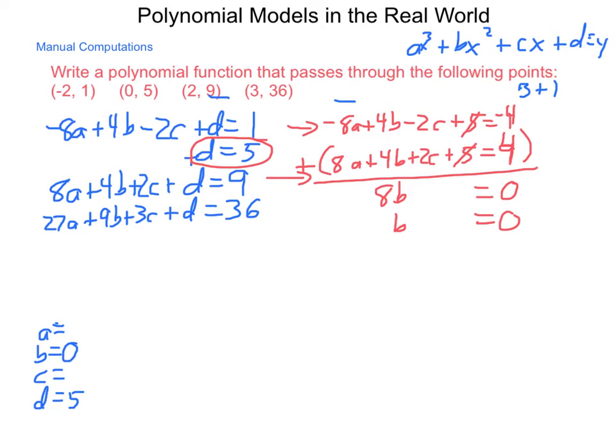Now, I can go back and find either my a or c. But in order to do this, I need to work with the fourth equation. So, pulling the fourth equation aside, I have 27a, b is 0, so 9b makes no difference, plus 3c, d is equal to 5 and I'm going to subtract that away, so 36 minus 5 is 31.